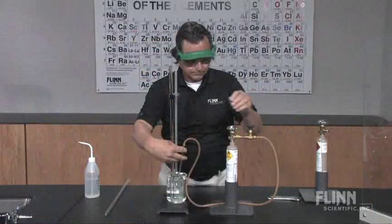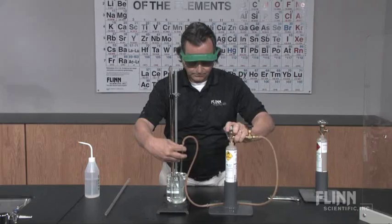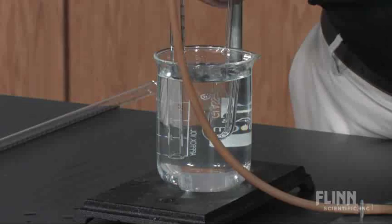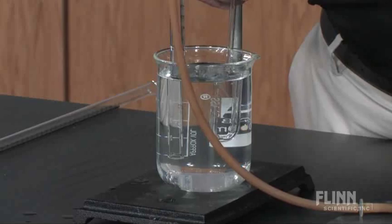With the regulator valve closed, open the cylinder valve. Place the glass tubing in the water away from the opening of the eudometer tube. Slowly open the regulator valve until gas bubbles flow out of the tubing. Adjust the gas flow to a slow stream of gas.